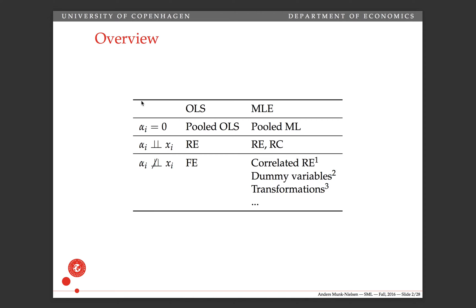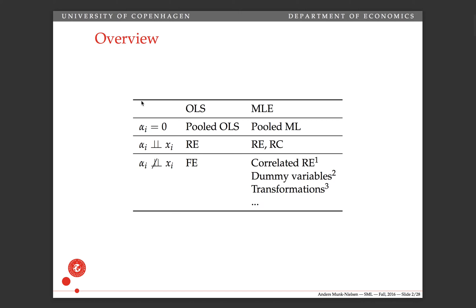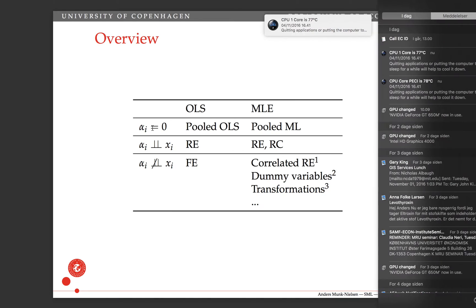In general, what we're talking about in simulated maximum likelihood is highly relevant when we get to a setting where we have panel data. When we have panel data we can start talking about these individual fixed effects that we call alpha i.